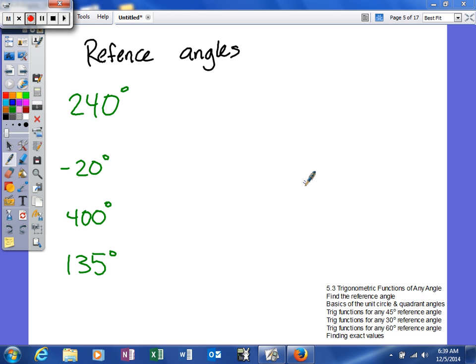Alright, let's look at a couple of examples of how to find our reference angles. So first thing we have is 240 degrees, so the first thing we have to do is make sure our angle is between 0 and 360, which as you can see this one is.